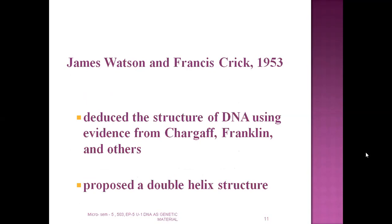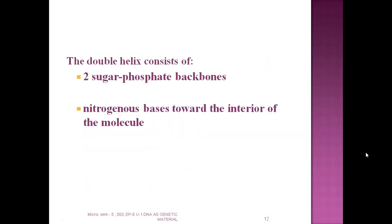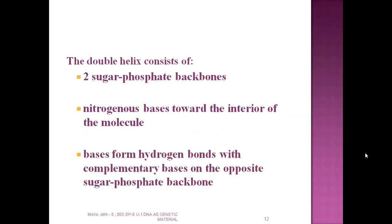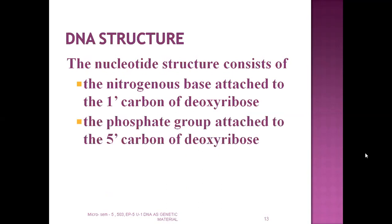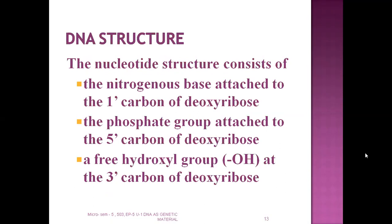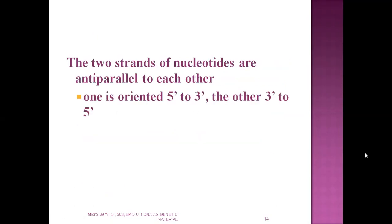Watson and Crick proposed the double helix structure of DNA. The double helix consists of two sugar-phosphate backbones with nitrogenous bases in the interior, forming hydrogen bonds with complementary bases on the other sugar-phosphate backbone. The nucleotide structure consists of a nitrogenous base attached to carbon, a phosphate group, and a 3'-hydroxyl group. The two strands run in antiparallel directions — one running 5' to 3', the other in the opposite direction.